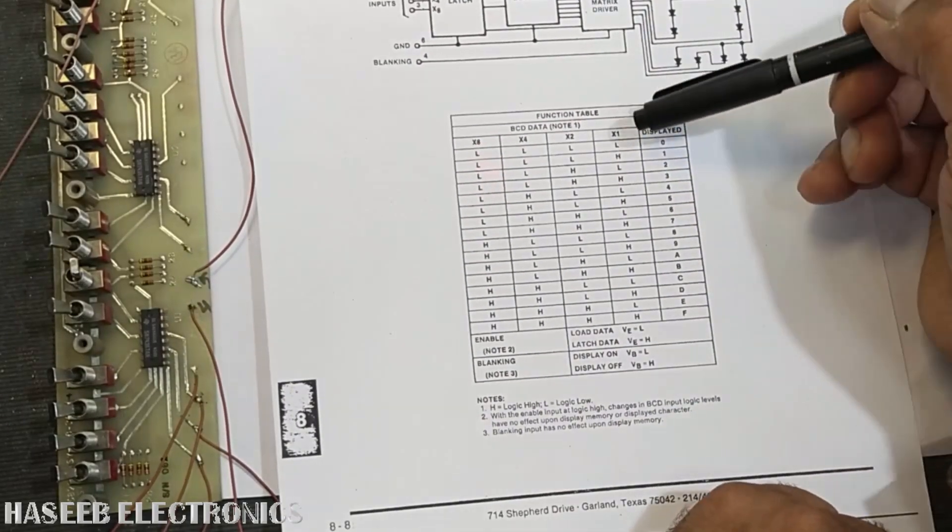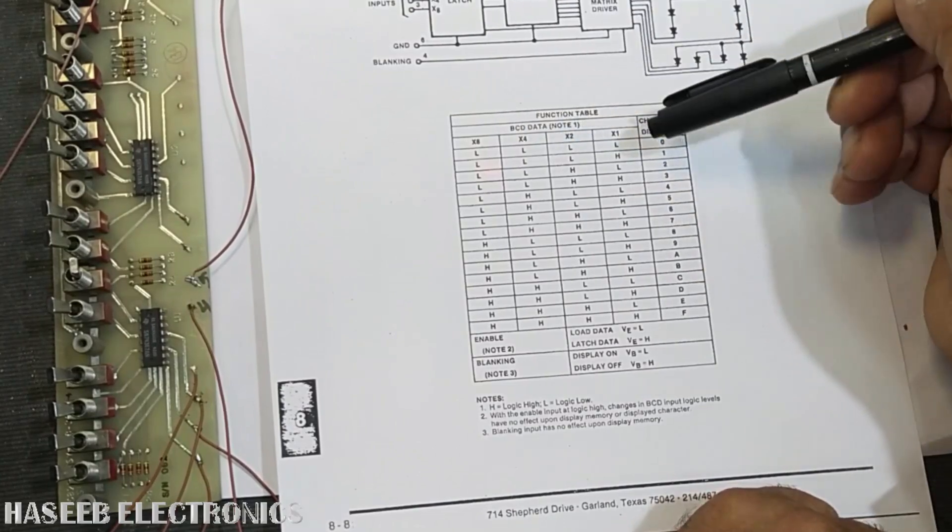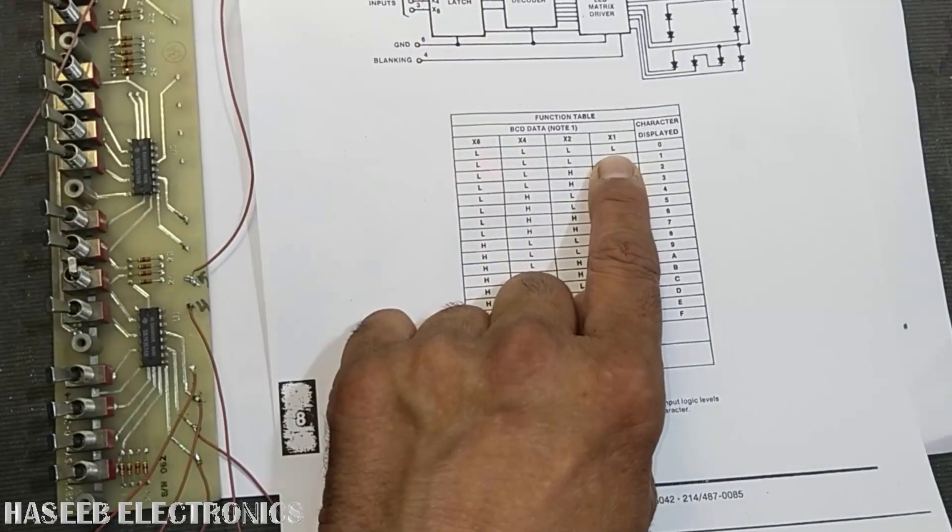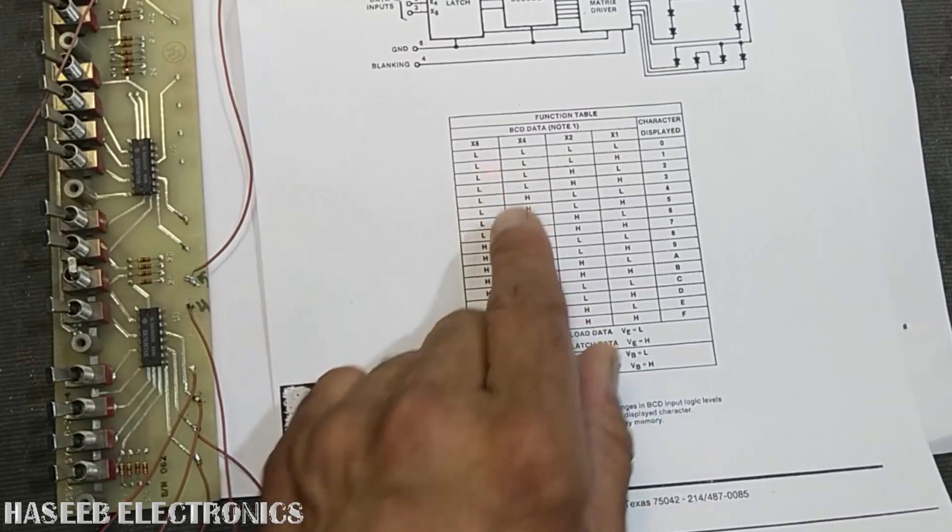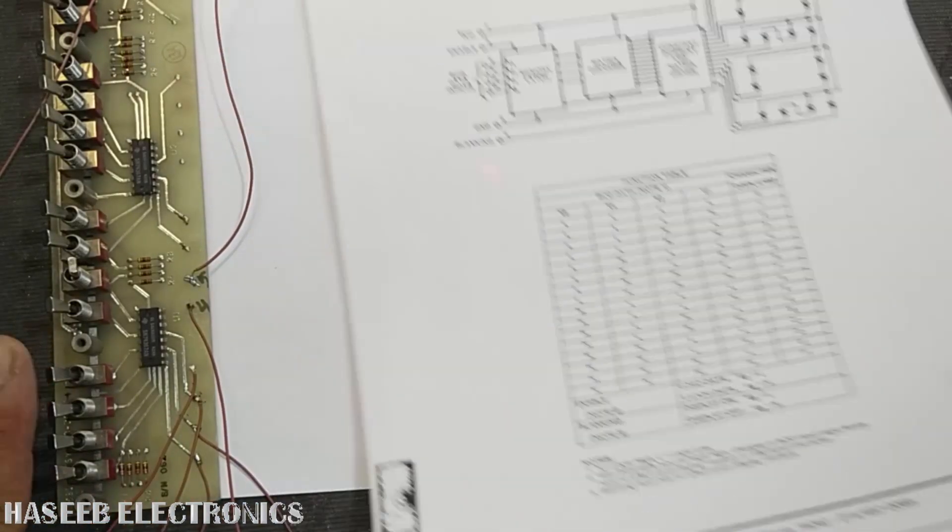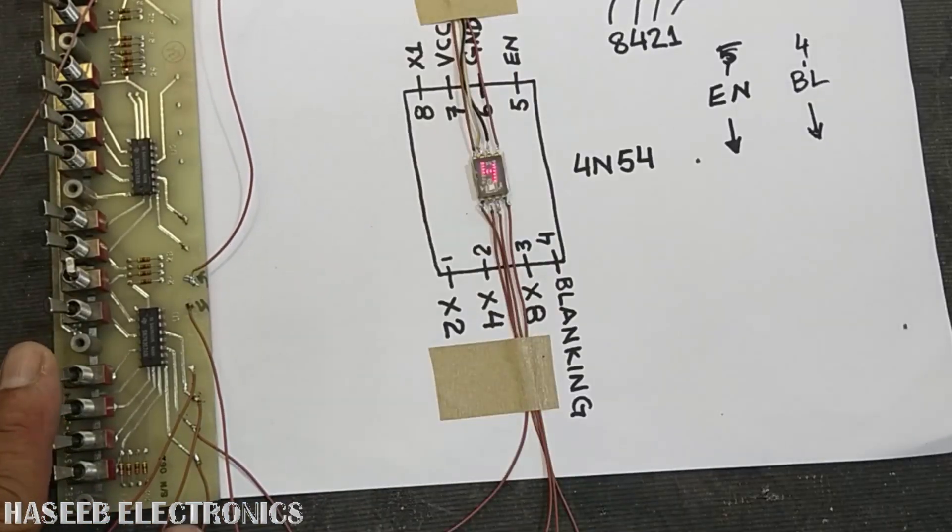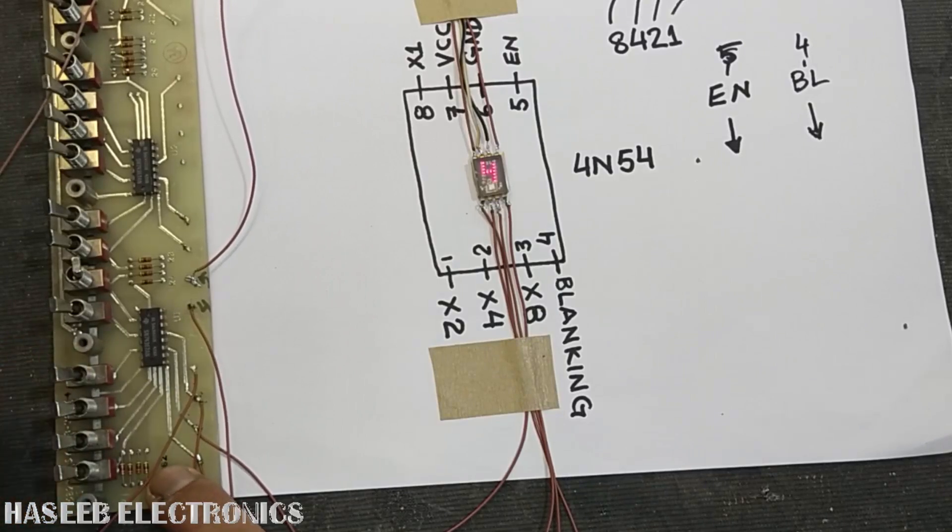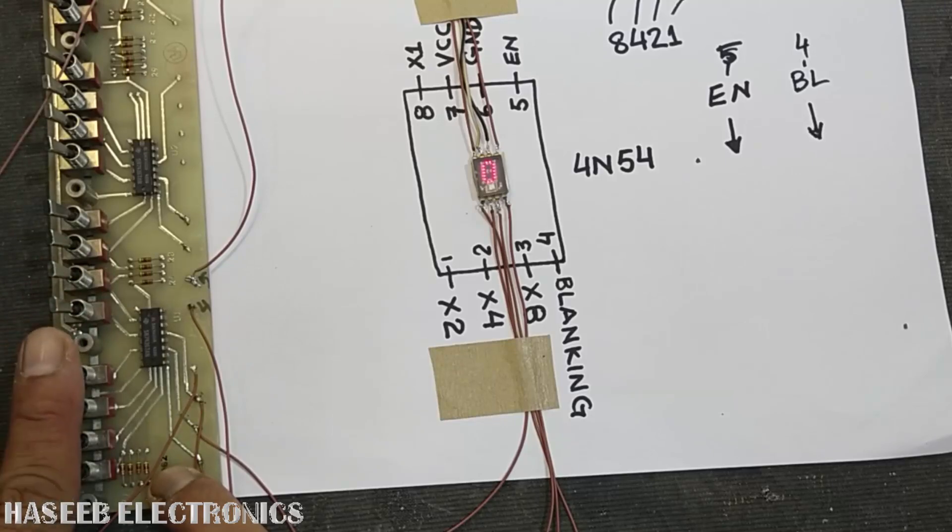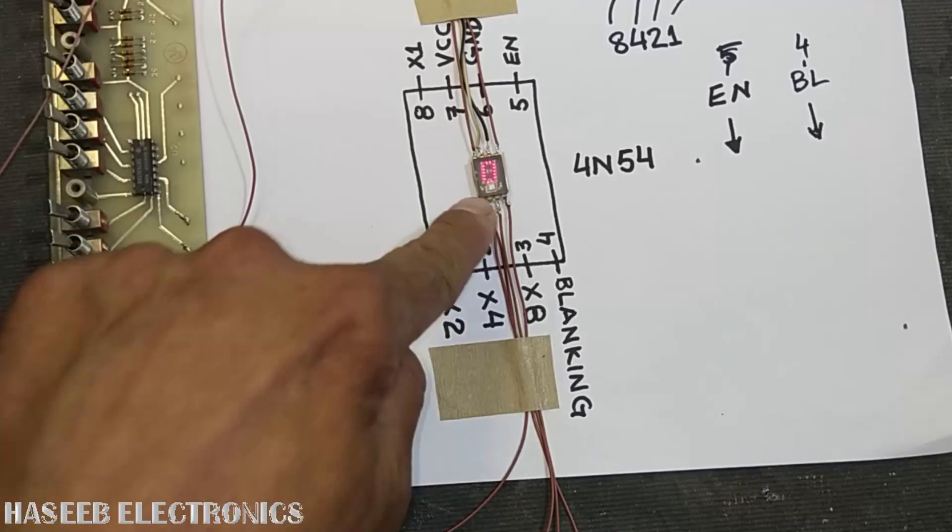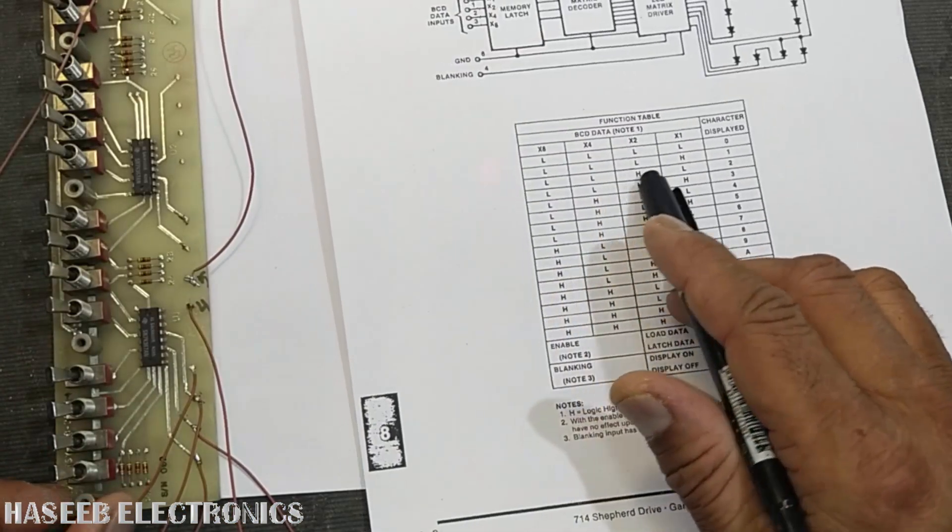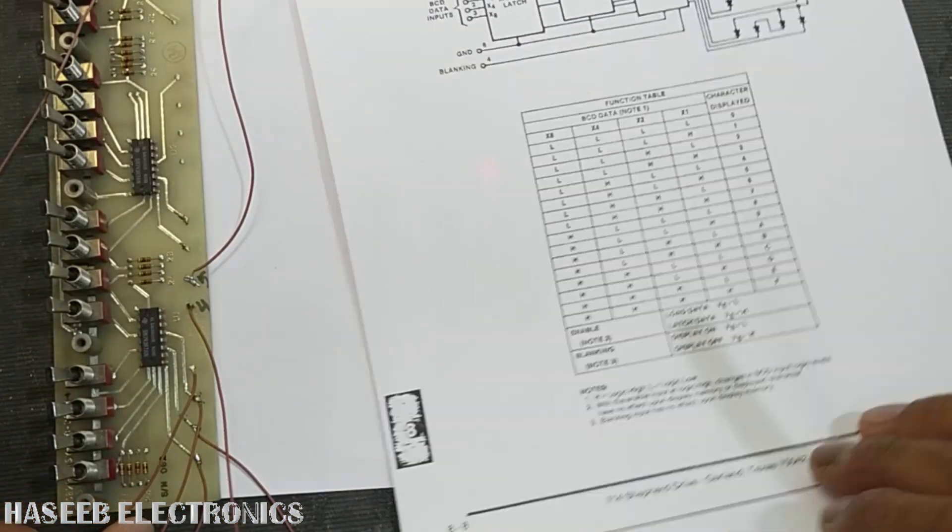Here are the BCD data, binary coded decimal. When all pins are low, this is the low condition. Left side, when the switch is at left side, it is low condition. When all the pins are low, it will display zero.